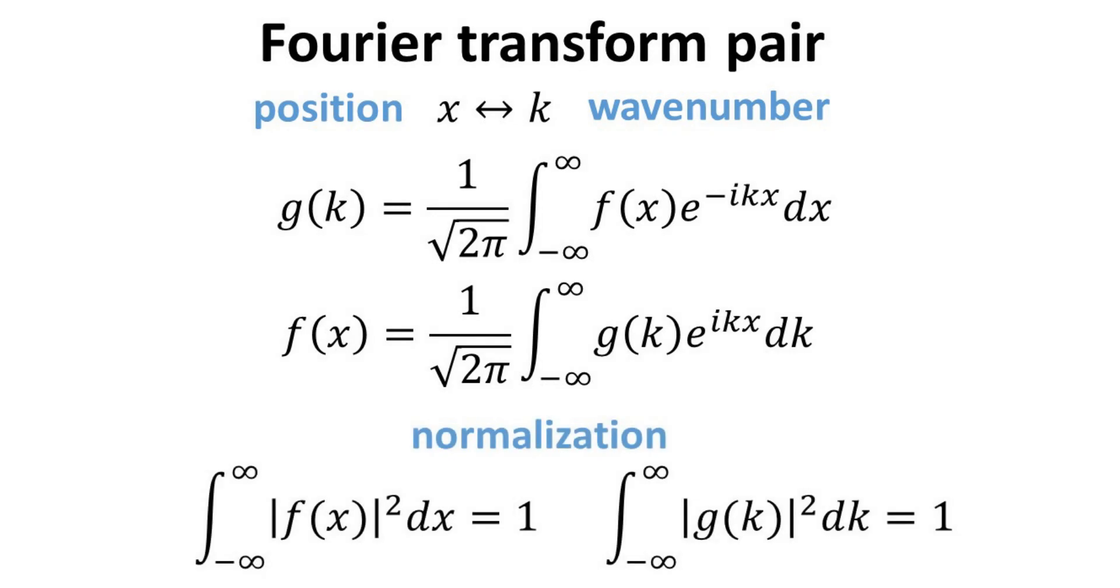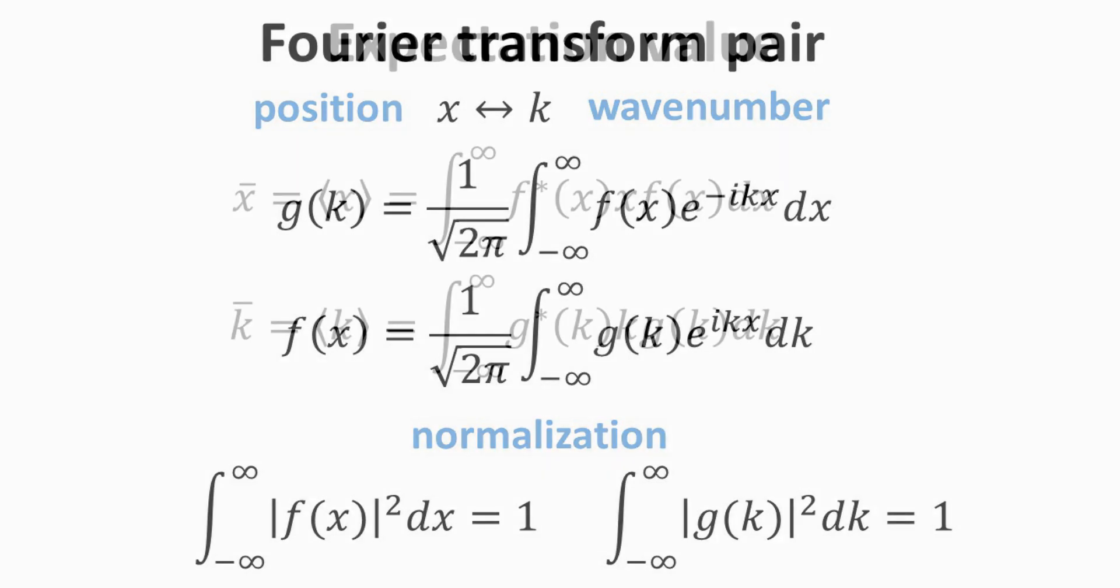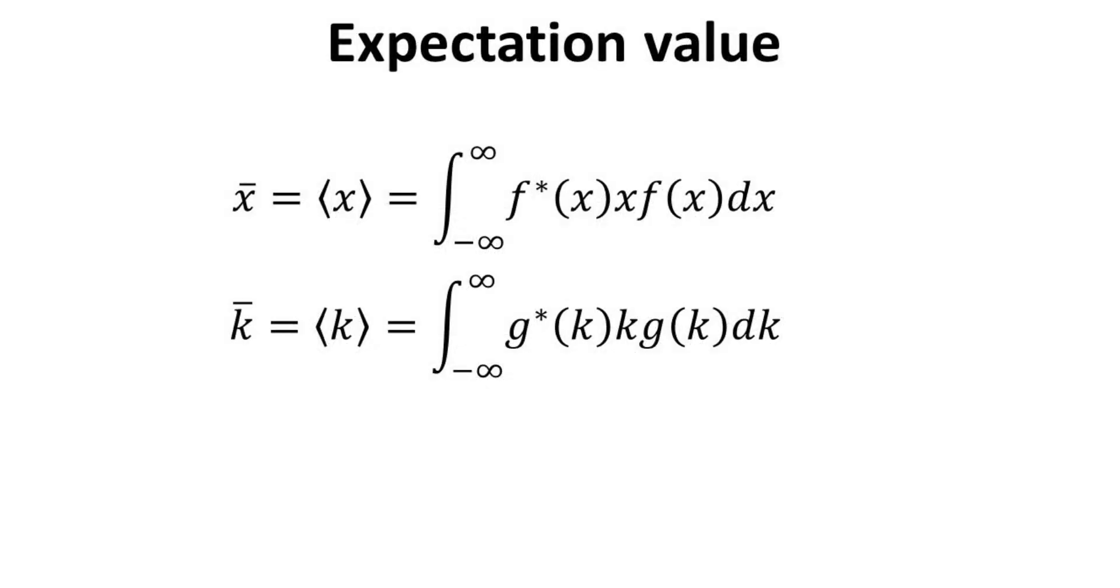In connection to quantum mechanics, these functions are analogous to wave functions in the position and momentum representations. Thus, we would like to make sure that these functions are properly normalized. In other words, their integrated modulus square should be 1. The modulus square of f and g yields us their respective probability functions.